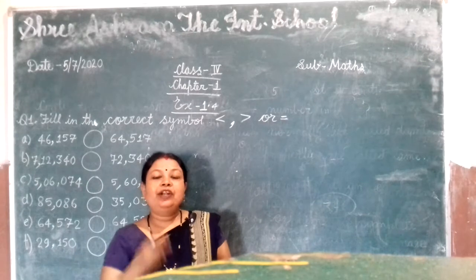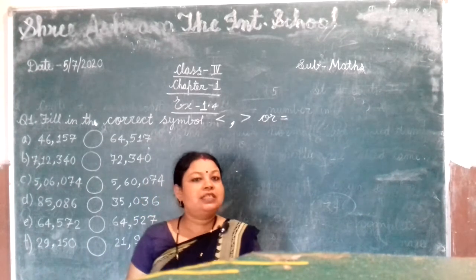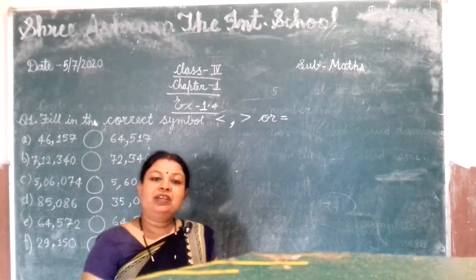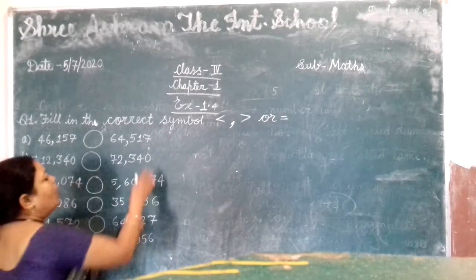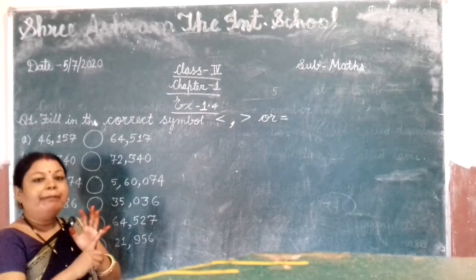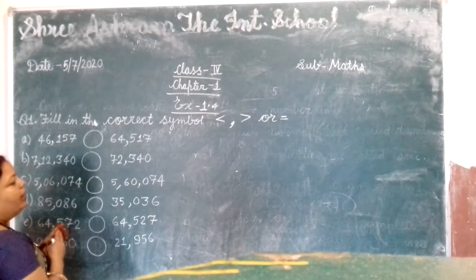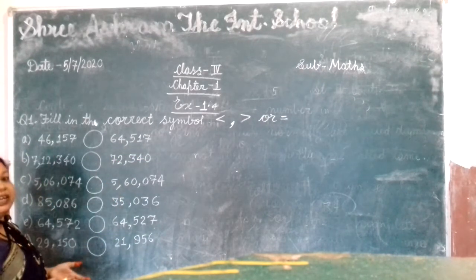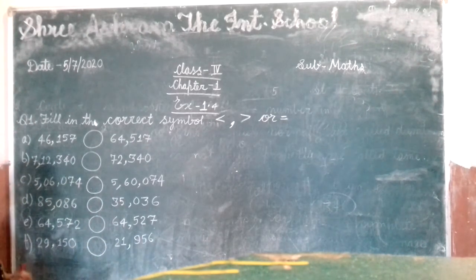This is a comparison between two numbers. We are given two numbers and comparing which one is smaller and which one is greater. This type of topic we studied in previous classes, so I will give you only some ideas. The first thing we remember is that we count the digits.